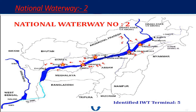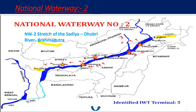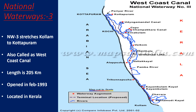National Waterway Two stretches from Sadiya to Dhubri. The river is the Brahmaputra. The total distance is 891 kilometers. It is located only in the state of Assam.